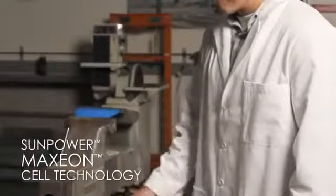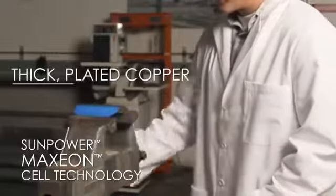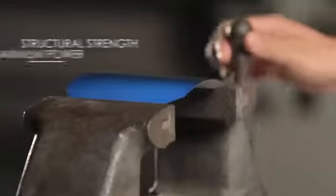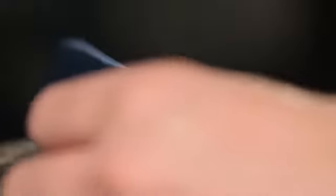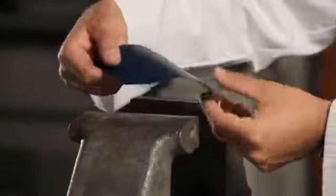But SunPower's patented Maxion cell technology has thick, plated copper covering the back of the cell, providing structural strength and allowing even a cracked cell to continue producing power.